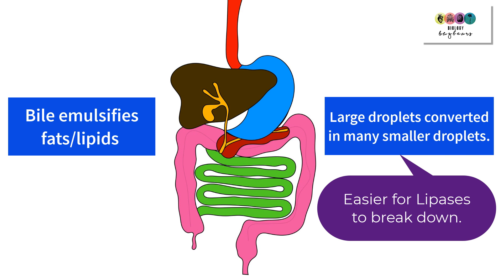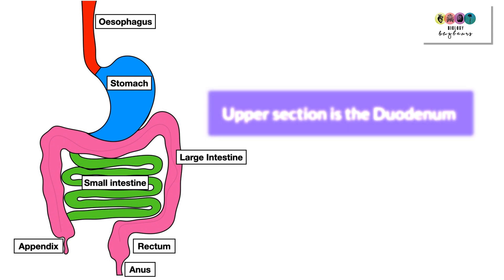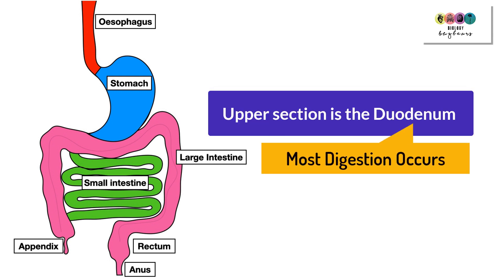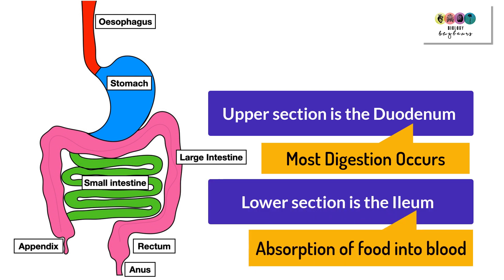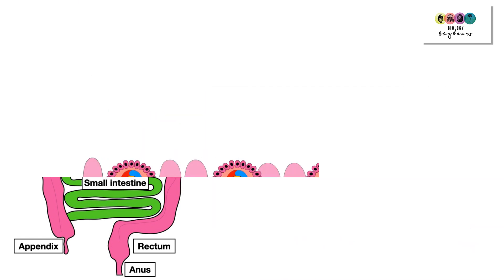The small intestine is very long and is split into two sections. The upper portion is the duodenum, where most digestion takes place. The lower section is the ileum, where digested food materials are absorbed into the bloodstream.